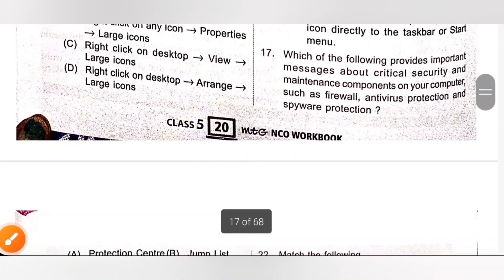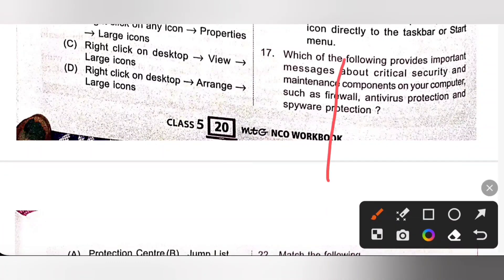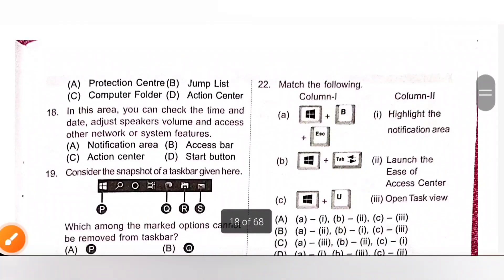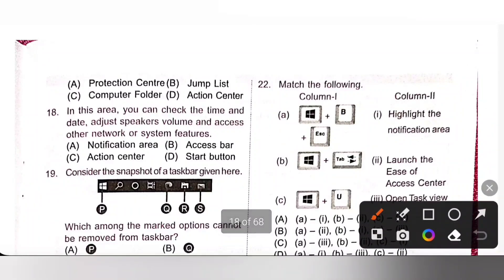17th. Which of the following provides important messages about critical security and maintenance components on your computer, such as firewall, antivirus protection and spyware protection? Answer is option A, protection center; B, jump list; C, computer folder; D, action center. So, action center. Option D is the correct answer.